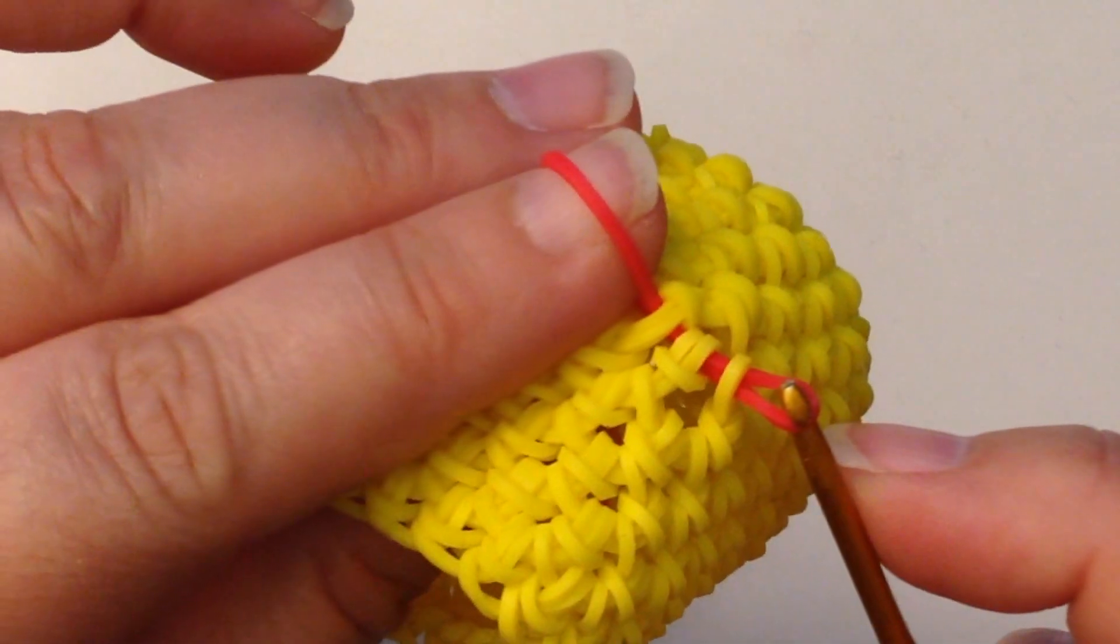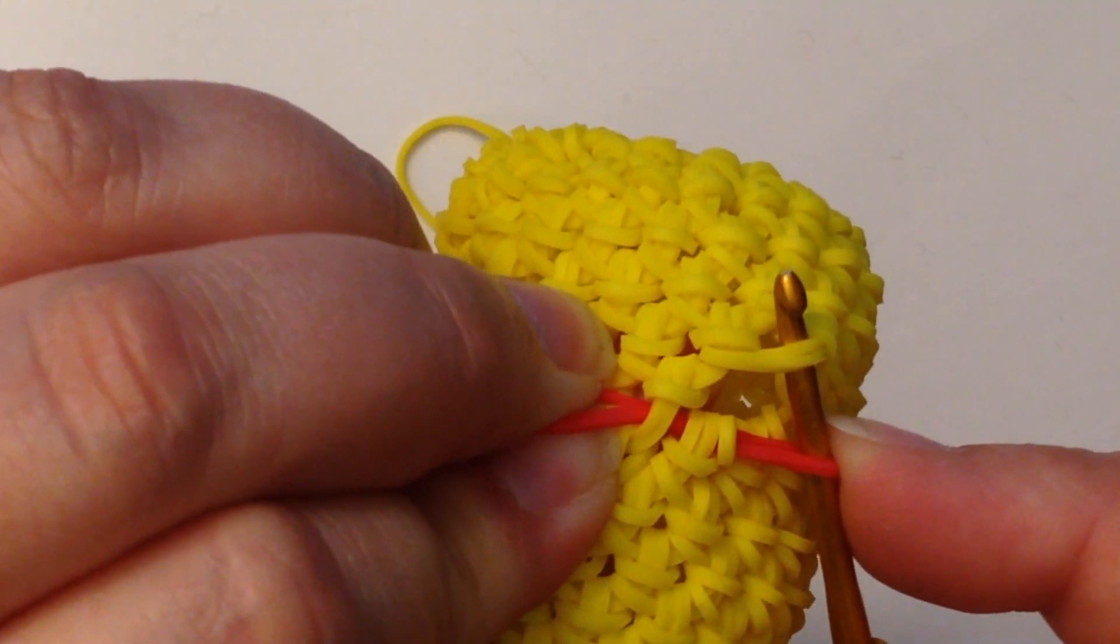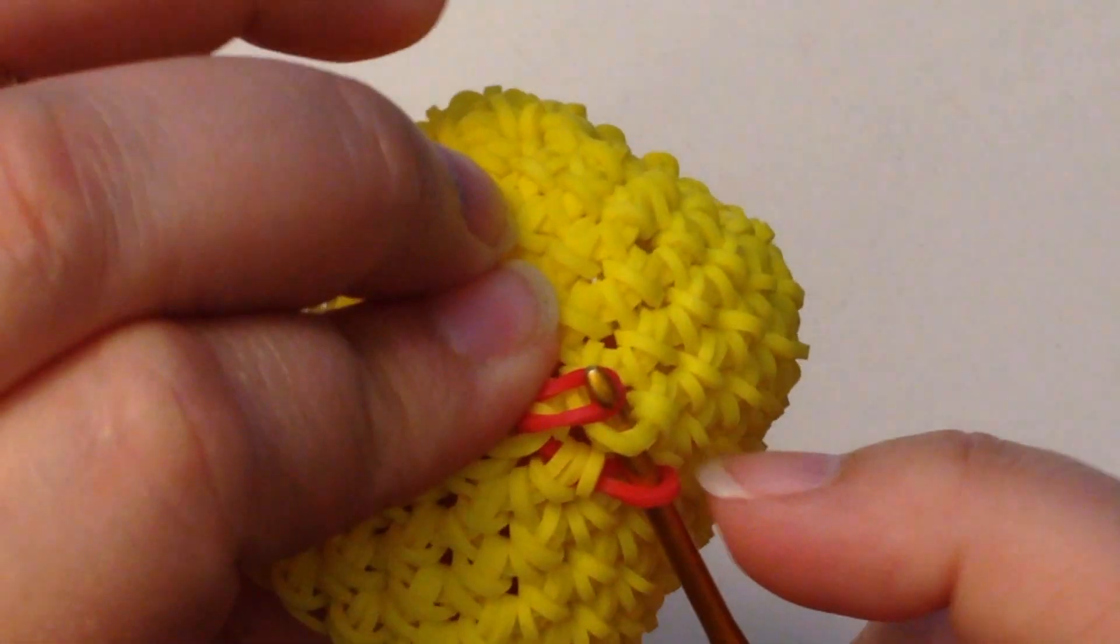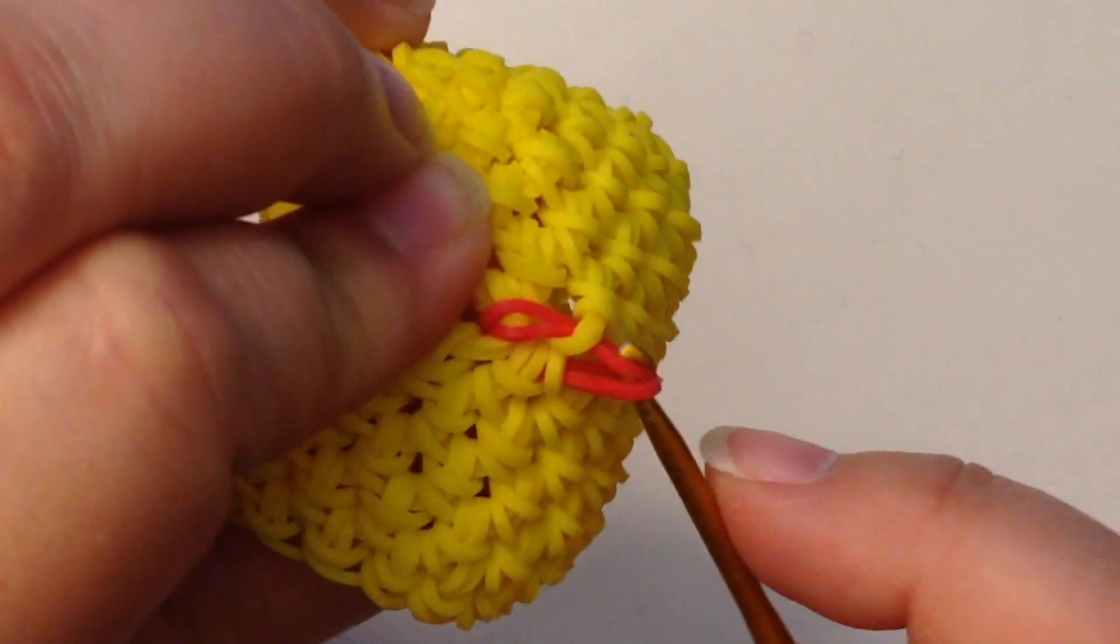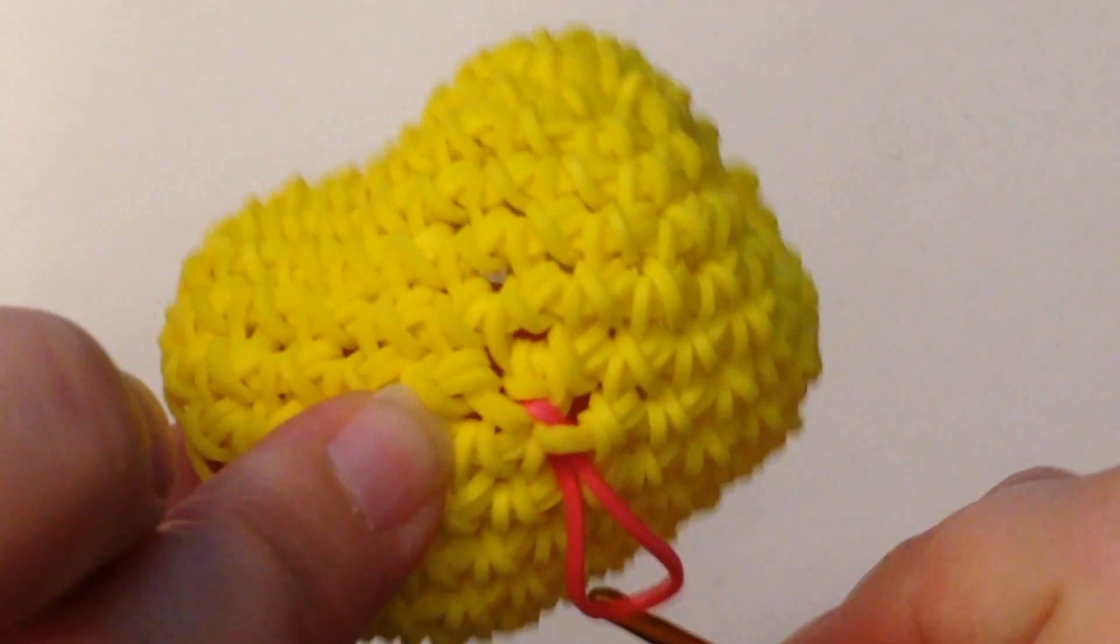Then I'm going to go under the loop that is up above. I'm going to grab the end of my band, pull it through, and you need to tie this in a slip knot, nice and tight.